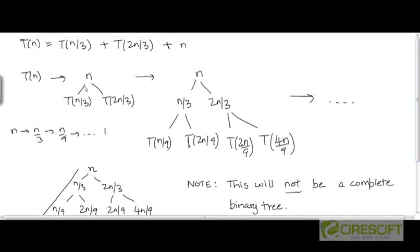So when we created level 1, we had a subproblem of size n by 3 here. When we created level 2, we had a subproblem of size n by 3 squared along this leftmost path. And so when we created level i, we would have had a subproblem of size n divided by 3 to the power i.